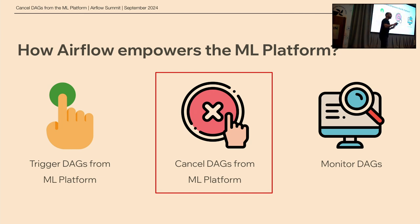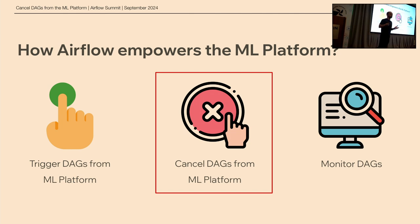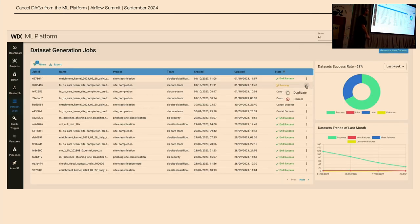Who here has ever triggered a DAG and then wanted to cancel it? All of us at some point. If you trigger a DAG and realize you made a mistake, there's no point letting it finish while spending resources. Our users don't use Airflow directly, so they can't cancel jobs from the Airflow UI. So if we allow them to trigger jobs from the ML Platform, it only makes sense to allow them to cancel those jobs from the ML Platform as well. You go into the job screen, choose a job, and click cancel — pretty intuitive.